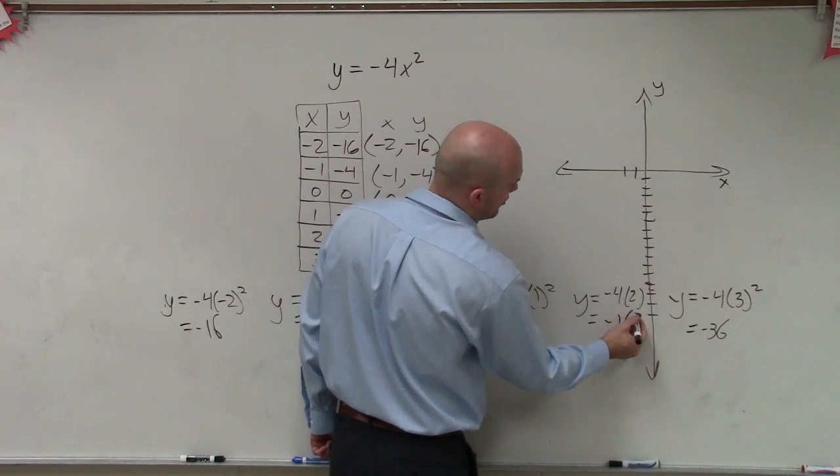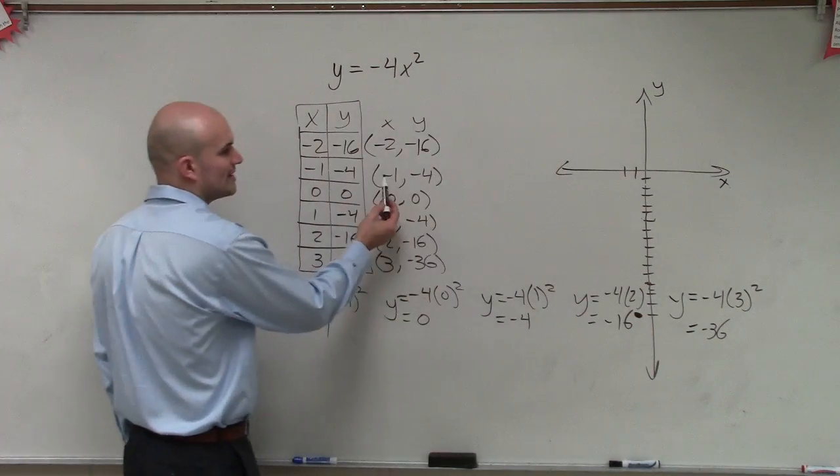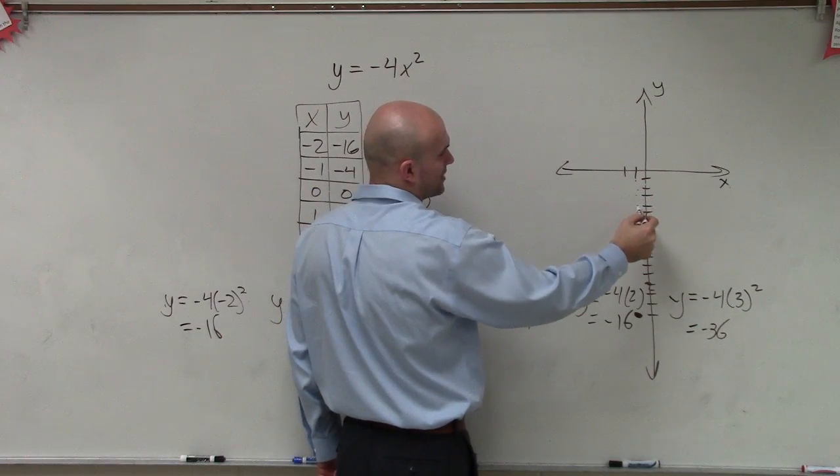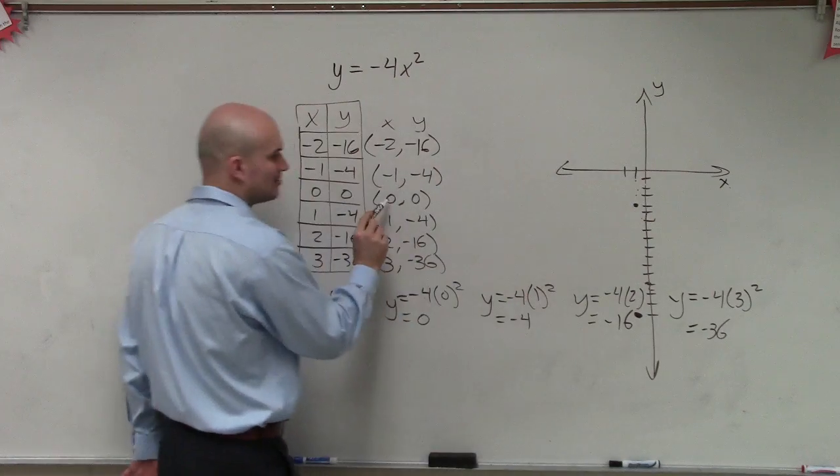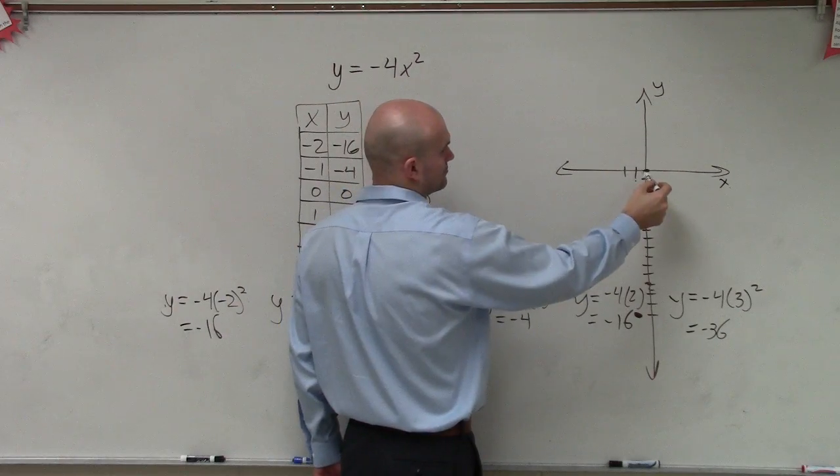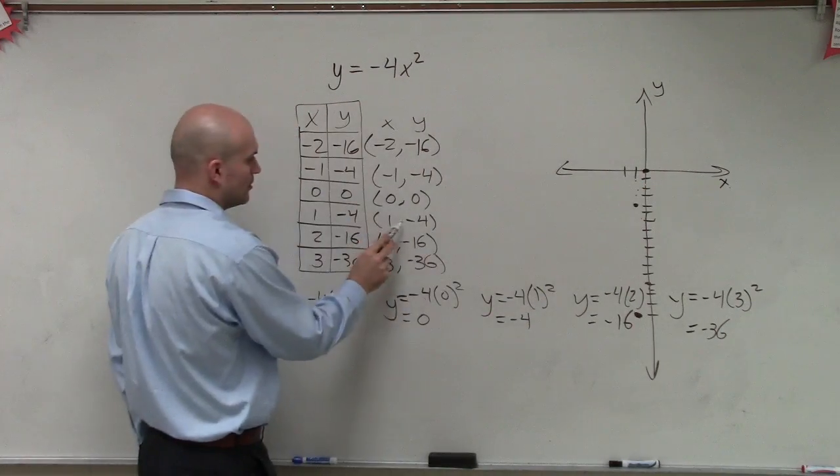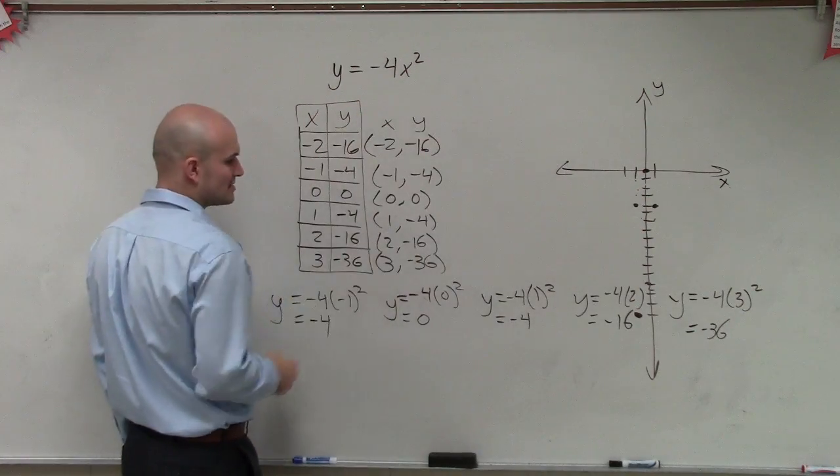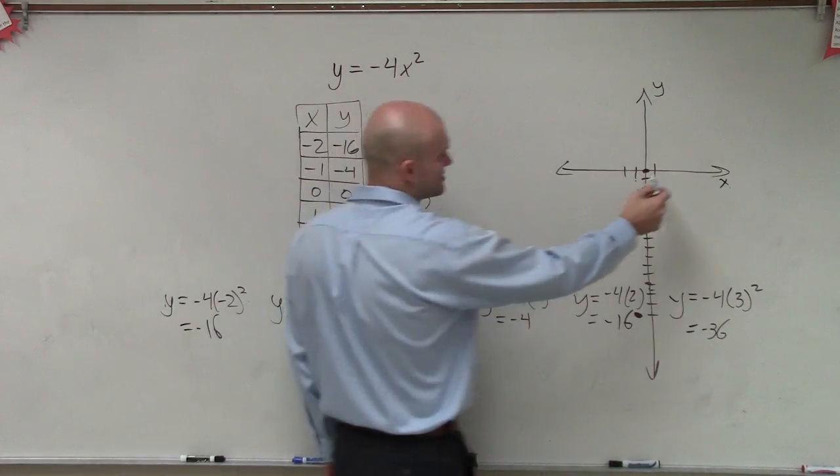So over negative 2 is going to be a point right here. Then I go over negative 1, down negative 4. So negative 1, down 4, 1, 2, 3, 4. Then plot the point 0, 0. Then I plot the point 1 comma 4 over 1, down 4. And then I plot the point over 2, down 16.